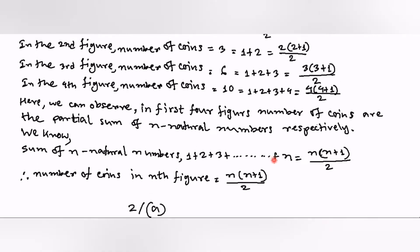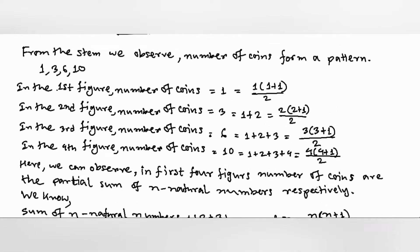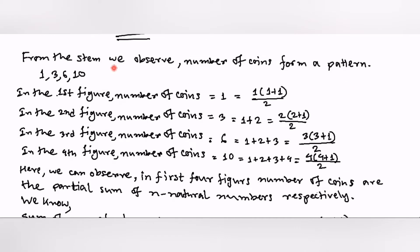...that the number of coins is n(n+1)/2. They asked what is the number of nth figure coins. This is a simple question. First, according to the condition, we can write the number of coins. We find out a pattern is formed — a sequence, a series — that is 1, 3, 6, and 10.